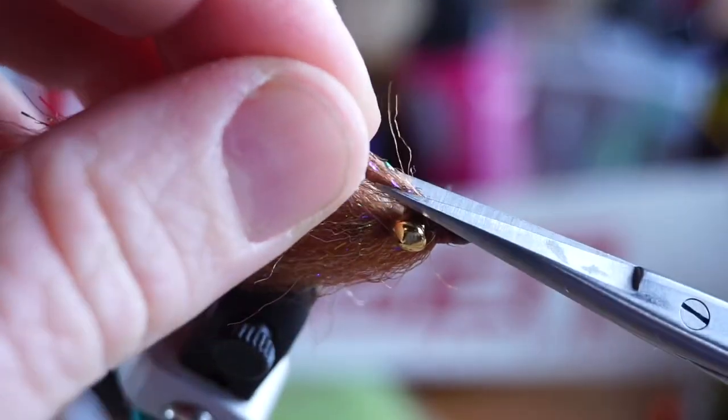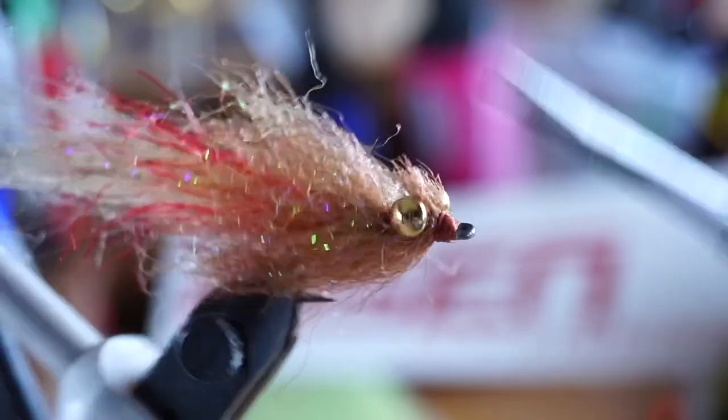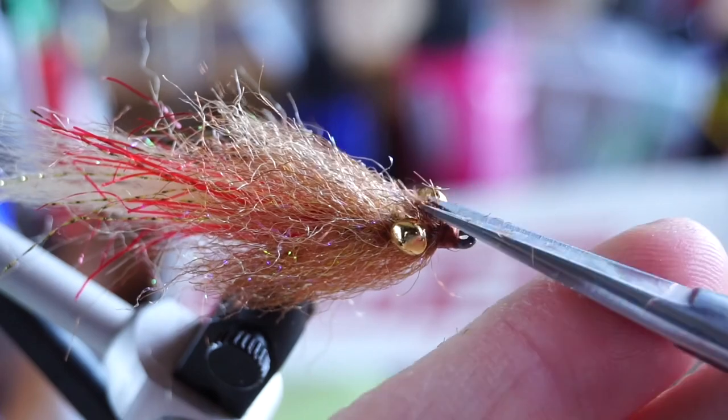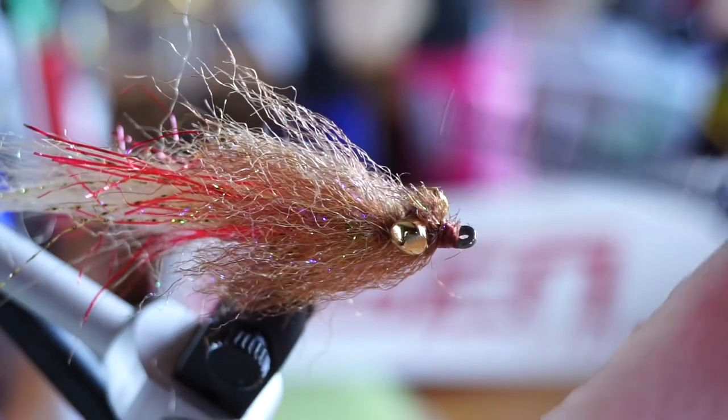Now I find that if I trim the fibers right above the dumbbell eyes here, the fly will swim hook point up better and will sit on the bottom a little cleaner and neater. This will help you get more strikes from weary redfish.